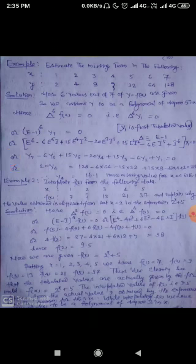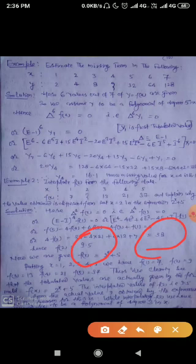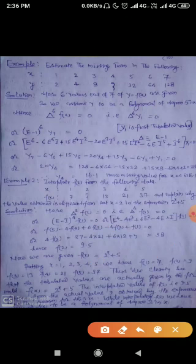Here we have to find f(2), so 4f(2) equals 37 minus 4 times 21 plus 6 times 13 plus 7 equals 38. After putting the values, we get f(2) equals 9.5. Now we are given f(x) equals 2 to the power x plus 5. Putting the values x equals 1, 2, 3, 4, 5, we have f(1) equals 7, f(2) equals 9, f(3) equals 13, f(4) equals 21, f(5) equals 37.